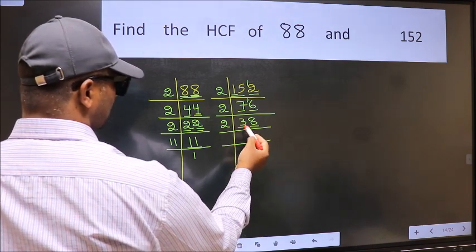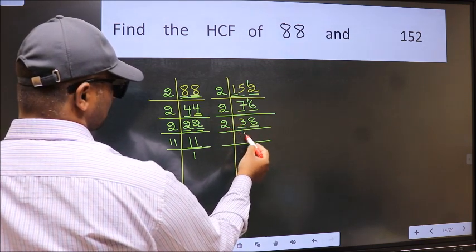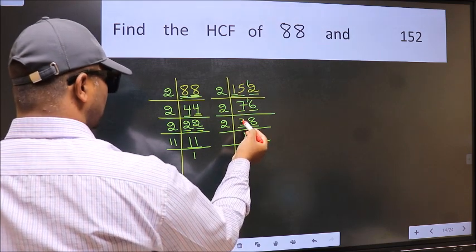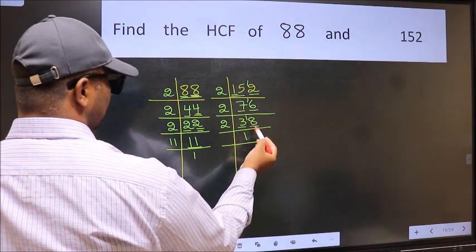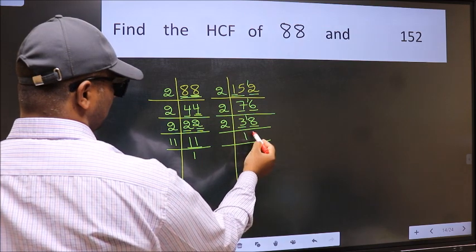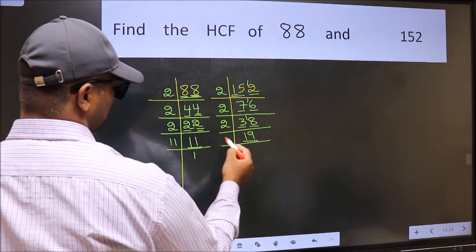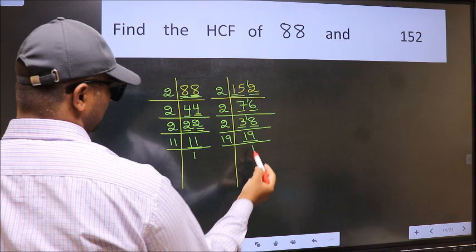Last digit 8 is even, so take 2. First number 3. A number close to 3 in 2 table is 2 ones 2. 3 minus 2, 1, 1 carried forward 18. When do we get 18 in 2 table, 2 nines 18. 19 is a prime number, so 19 ones 19.